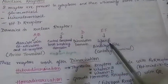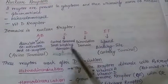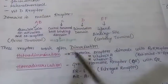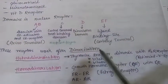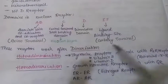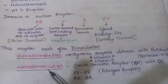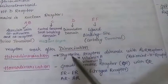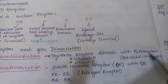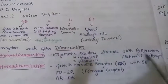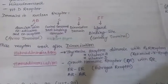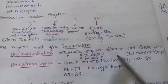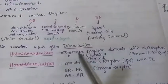Nuclear receptors work after dimerization. Dimerization can be of two types: homodimerization or heterodimerization. Heterodimerization is seen in thyroxine, vitamin A, and vitamin D receptors. For example, thyroxine receptors dimerize with RXR (retinoid X receptor), forming a heterodimer. Vitamin A and vitamin D also form dimers with RXR receptor.